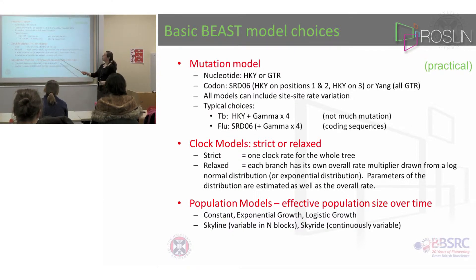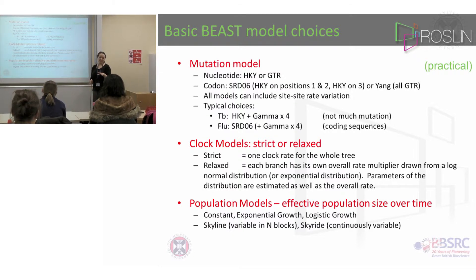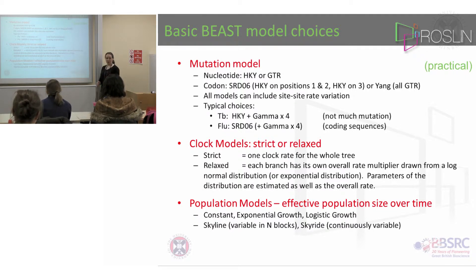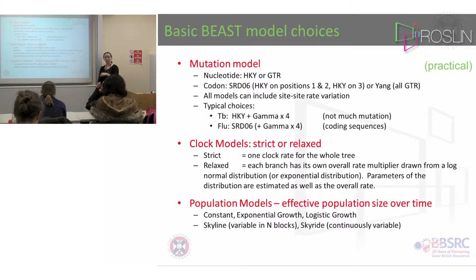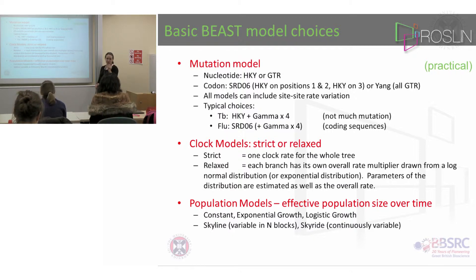So you might want to make a model which accounts for that codon structure. That's called the SRD-06 model — SRD being the initials of the author who made the model. In SRD-06, you have an HKY model on positions one and two, and a slightly different HKY model on position three. Or you can use a Yang model where each codon position gets its own GTR model.